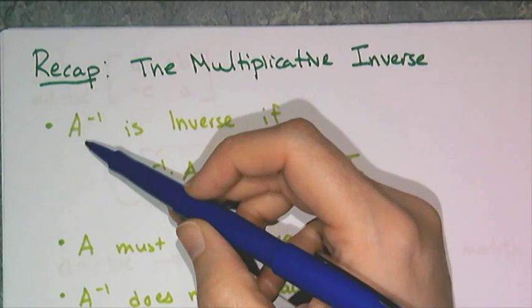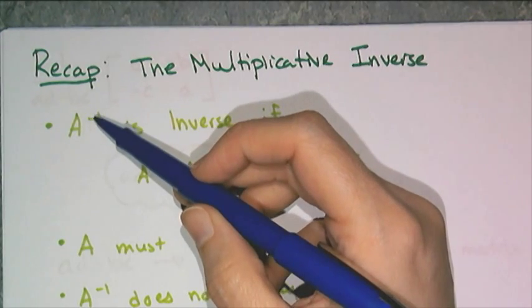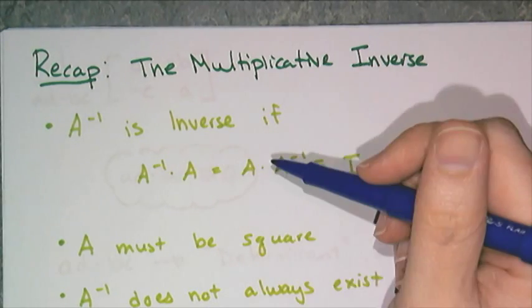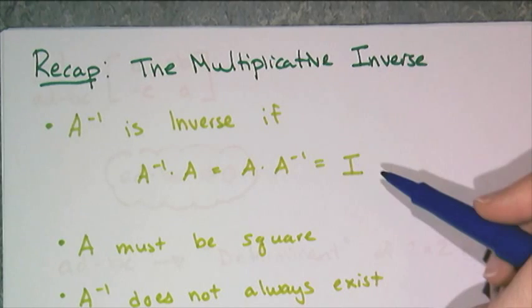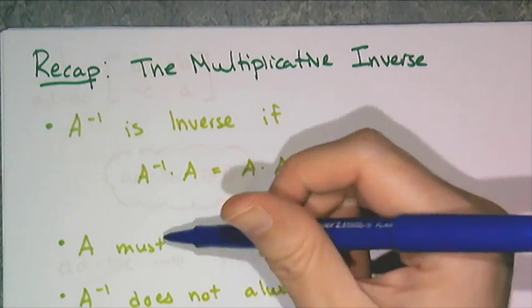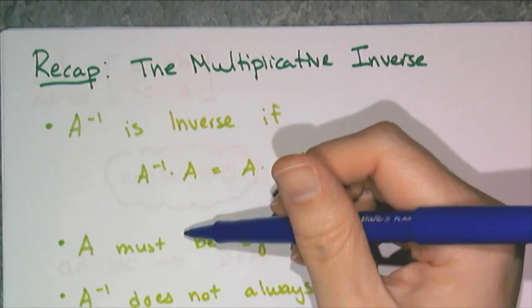First, we know the notation is A raised to the negative 1 power, and it's an inverse only if the inverse times the matrix is equal to the matrix times the inverse, which is equal to the identity, which means that A and its inverse must both be square.